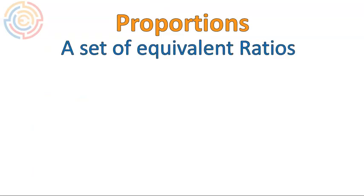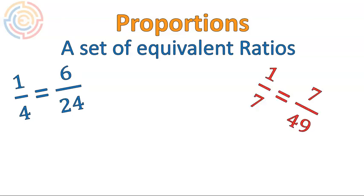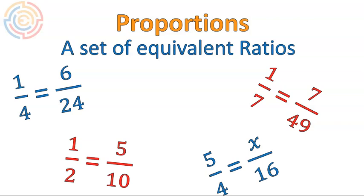Now let's talk about proportions. Proportions are a set of equivalent ratios. We just talked about one — one fourth is equal to six over twenty-four. That is a proportion, a set of equivalent ratios. Here are more examples: one seventh equals seven over forty-nine, one half is five over ten, five fourths is x over sixteen — don't worry, we'll get to that — and two thirds is equal to eighteen over twelve. These are all examples of equivalent ratios or proportions, and specifically we can use that one with the x on top for solving problems.